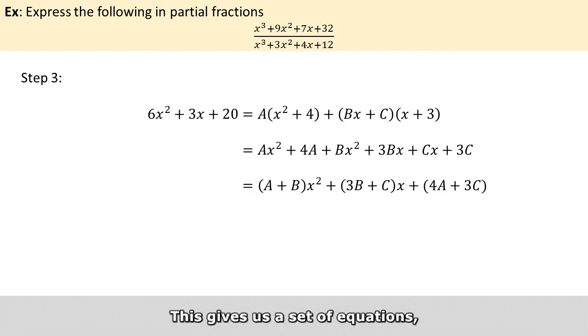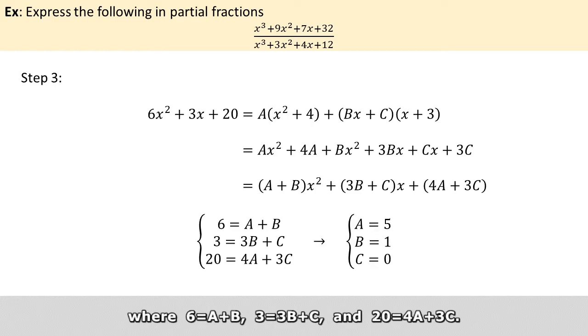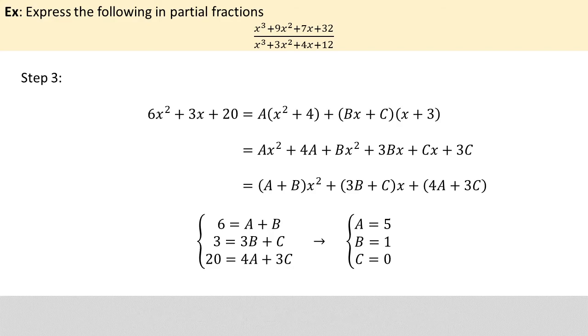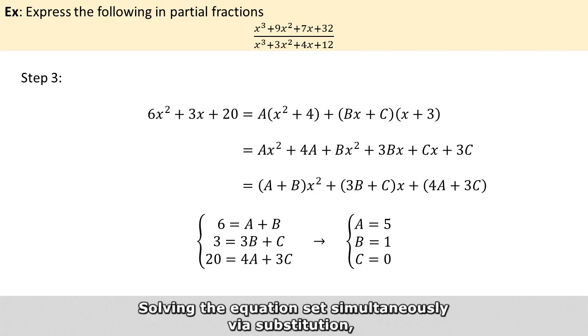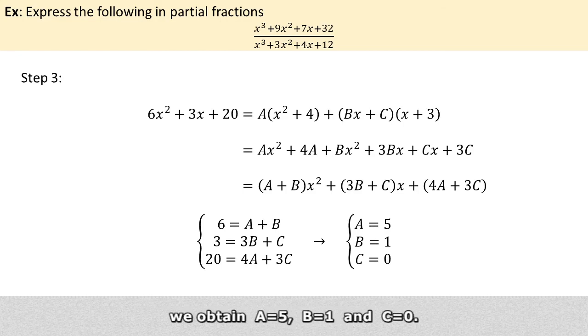So this gives us a set of equations where 6 = A + B, 3 = 3B + C, and 20 = 4A + 3C. And then solving the equation set simultaneously by substitution, we obtain A = 5, B = 1, and C = 0.